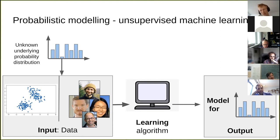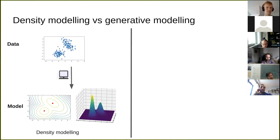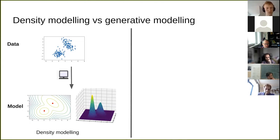I've been a bit loose about what I actually mean by 'model,' so let me clarify. I want to distinguish between two types of probabilistic models: density models and generative models.